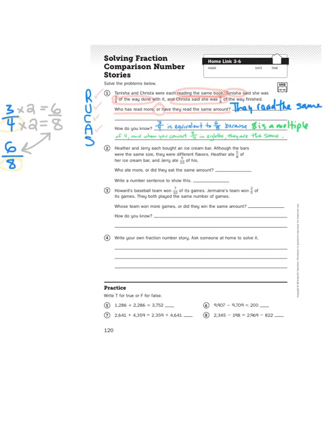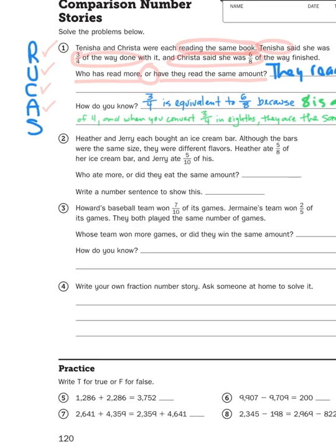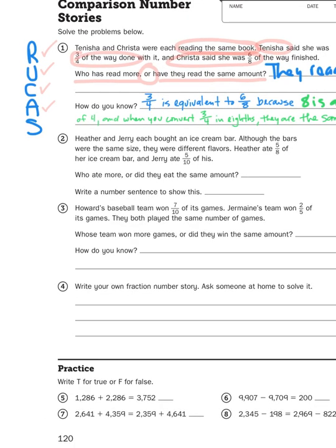We have to compare the fractions by looking at numerators and denominators. If the denominators are different, I have to make one fraction equivalent to the other so I can compare. Problem two, on the other hand, has two fractions with different denominators but the same numerators. Heather and Jerry each bought an ice cream bar of the same size but different flavors. Heather ate five-eighths of her bar, and Jerry ate five-tenths of his. Who ate more, or did they eat the same amount?